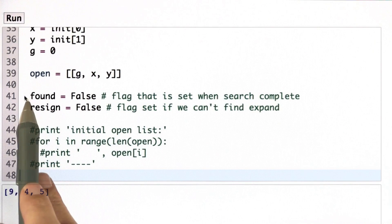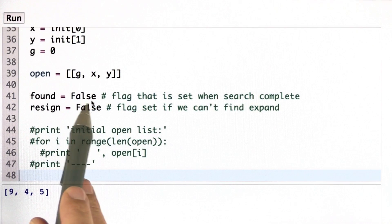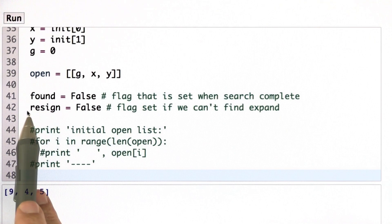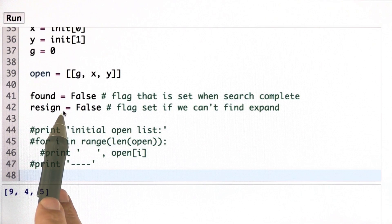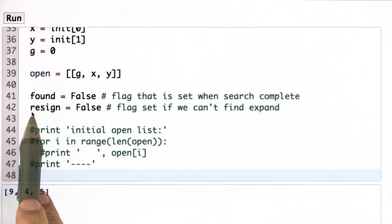Inside my code I use two flags. One is found, which will be true when the goal position is found. And one is resigned, which will be true if I don't find a goal position and then explore everything. The second one will be the case when my open list just turns empty without finding the goal.